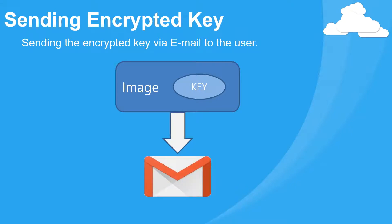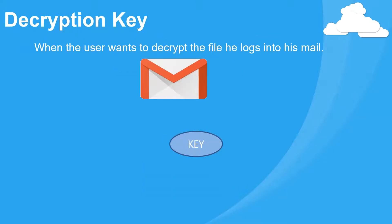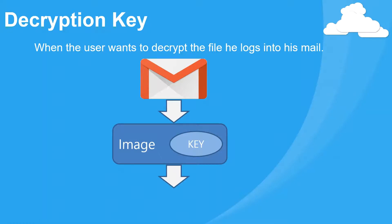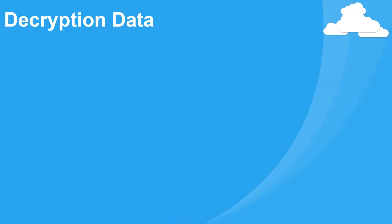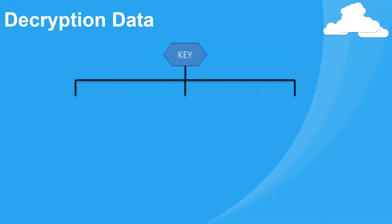And if the user wants to decrypt the data or the file, he will log into his email and see the key encrypted in the image, and decrypt the image to get the key. After he gets the key, it is then used to decrypt the data which was earlier encrypted in 3 different parts.